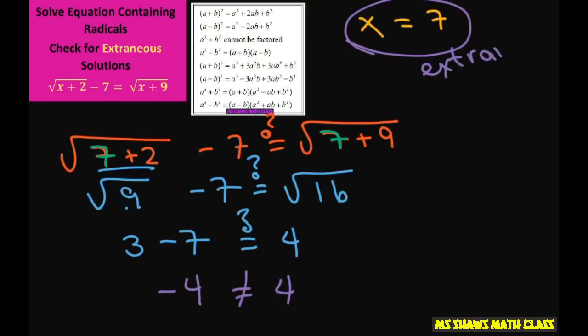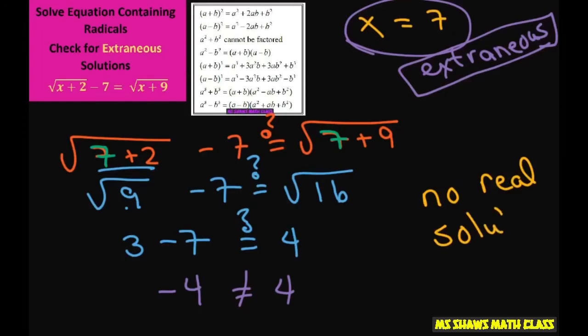It's an extraneous solution due to the fact that we were squaring those radicals. And for this problem we're going to say we have no real solution. And that is your final answer.